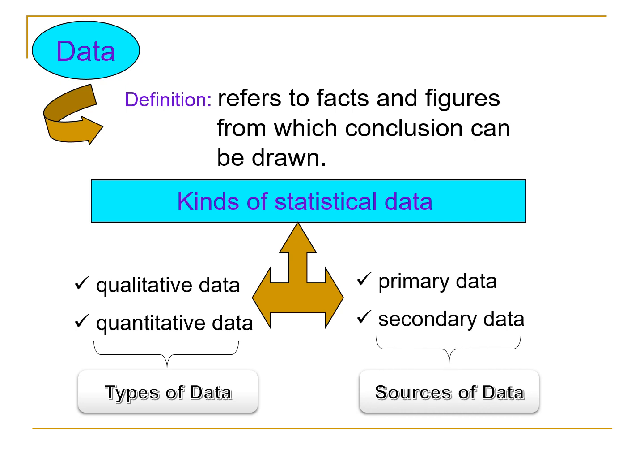There are two sources of data: primary data and secondary data. Primary data is data that is collected from first-hand sources using methods like surveys, interviews, or experiments. While secondary data is data that is collected by someone other than the user or researcher. Common sources of this data include censuses, information from government agencies, organizational records, and others.